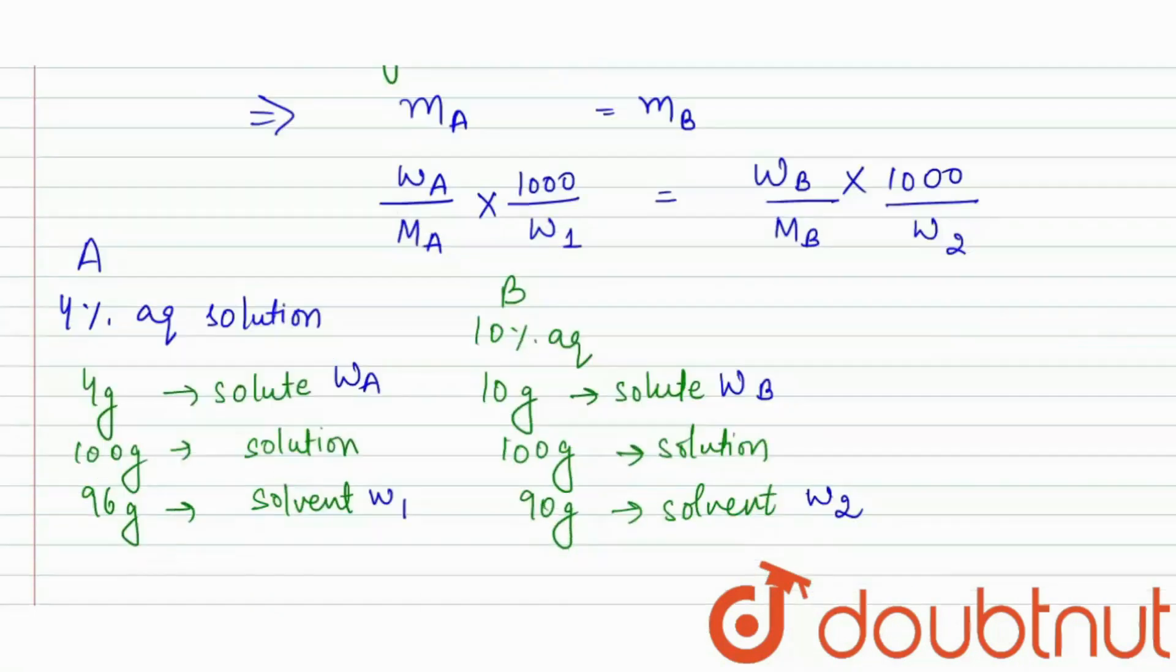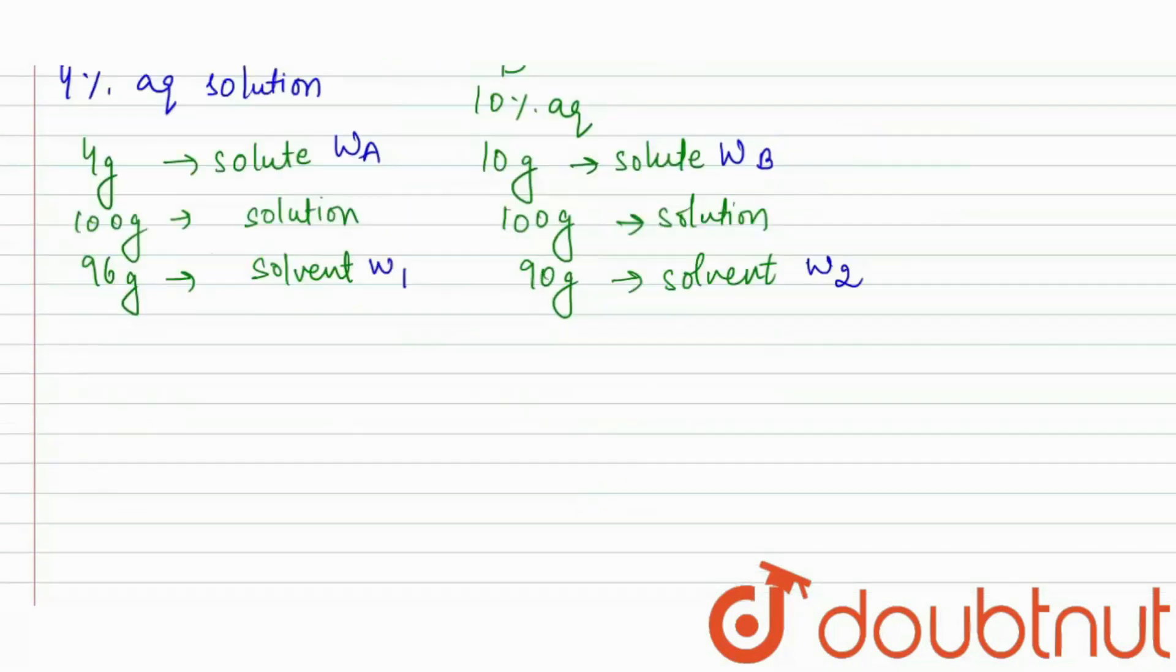Let's substitute the values in the formula. Molality of A is equal to molality of B. So, it will be 4 upon molar mass 60 into 1000 upon 96. It is W1 is equal to WB is 10 upon molecular mass we have to calculate into 1000 upon 90.